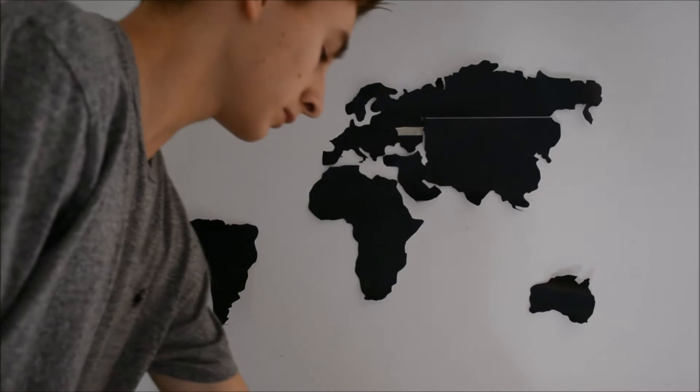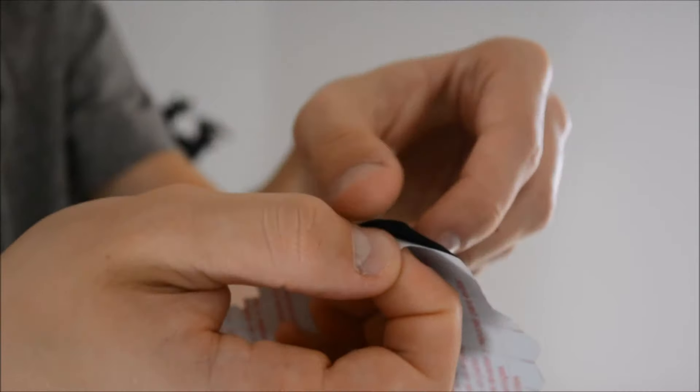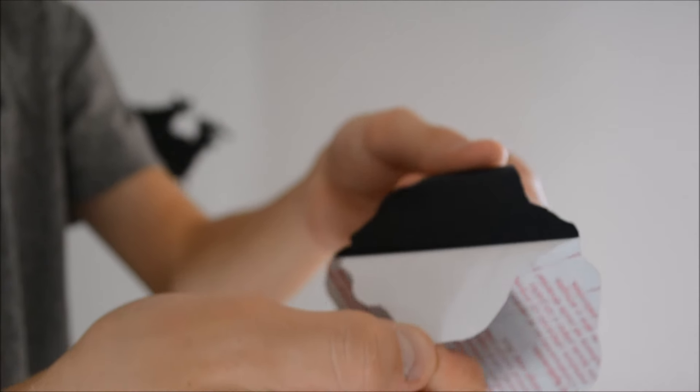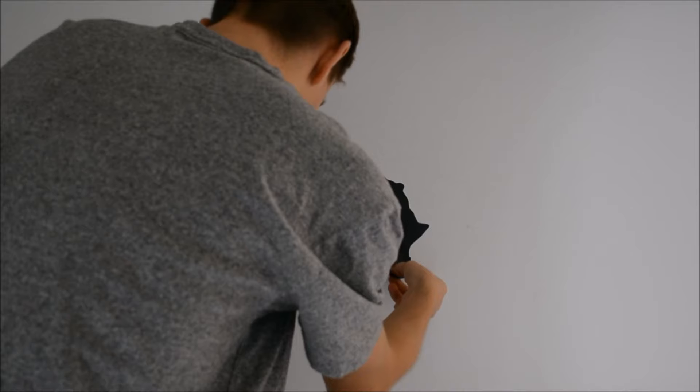Then lightly trace around each country and take them off. Peel off the back of the chalkboard paper and place your countries on the wall where your pencil markings are.